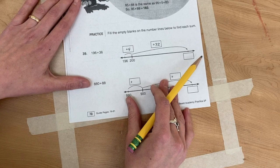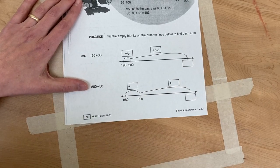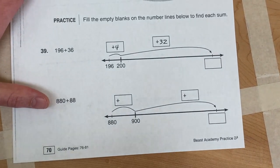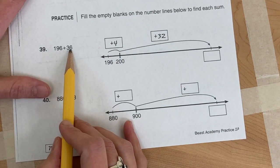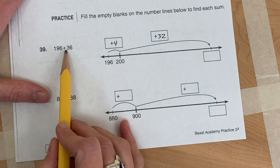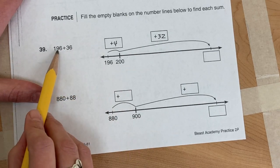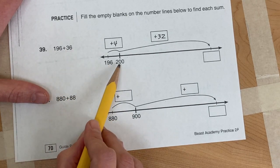Now let's look at the next example problem. I'll zoom in just a little bit better so you can see. We have 196 plus 36. We look at these numbers and think, what are we close to? 196 is very close to 200.